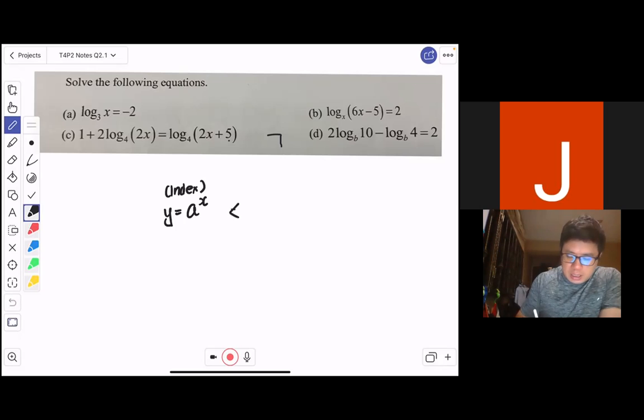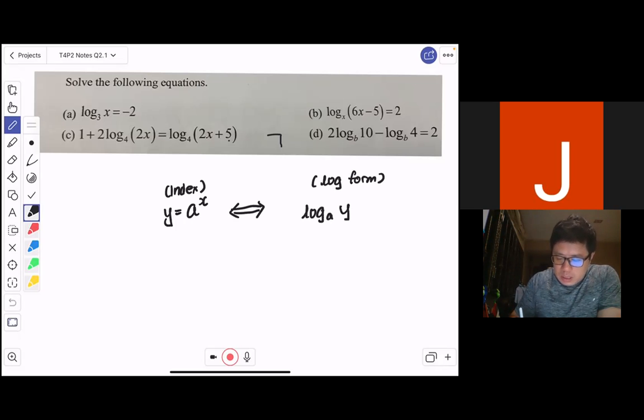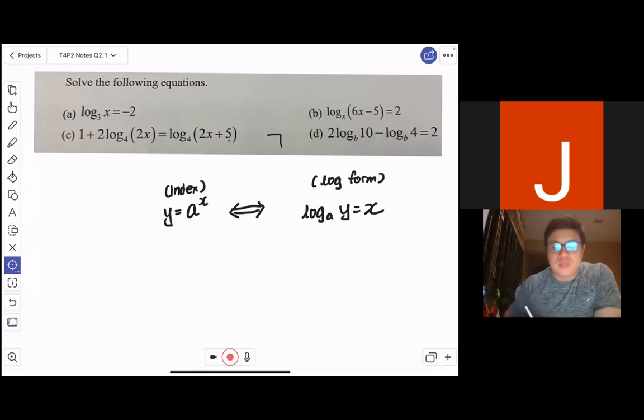This is basically telling us that if you were to change it to the logarithmic form, this means that log_a(y) = x. We can use this quite easily to help us. The base of the index is also the base of the logarithm. We read this as log base a of y equals x.